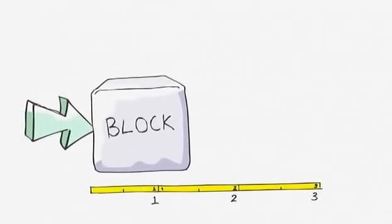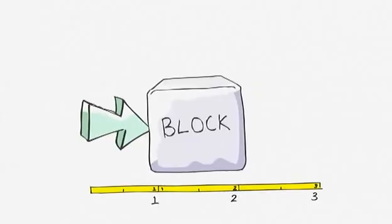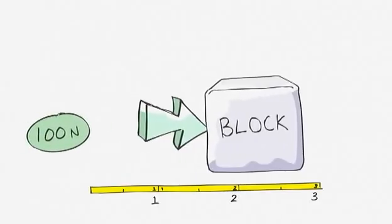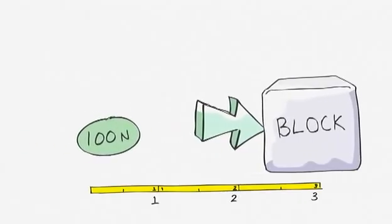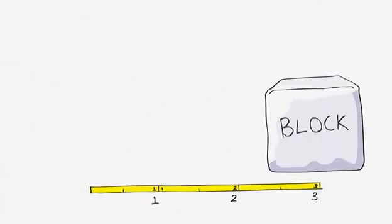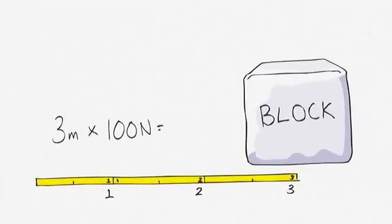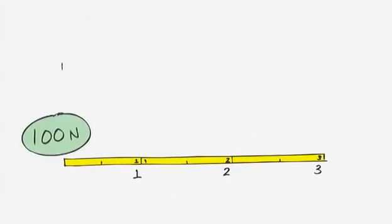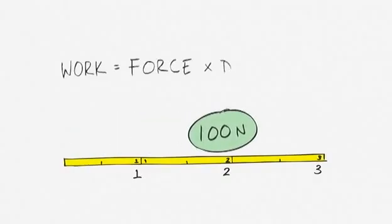Here's a block. I push it in this direction for 3 metres. I'm using a force of 100 newtons, as you can see. And I've travelled 3 metres. All we need to do is multiply the distance by the force. So 3 metres times 100 newtons equals 300 joules of work. When you move a force over a distance, then you have done work.